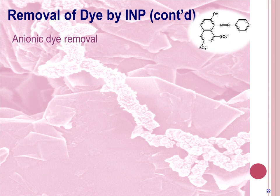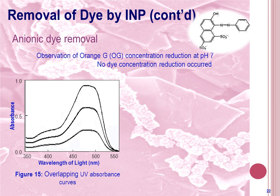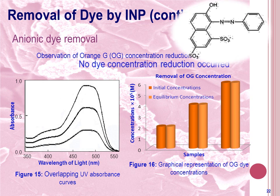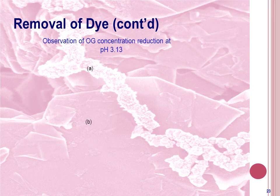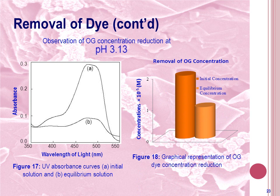In the case of treating anionic dye, which is orange G, the dye was first treated at pH 7, which gave an overlapping absorbance curve at initial and equilibrium dye concentrations, also shown in a bar chart. Due to the negative charge of orange G, no dye concentration reduction occurred at pH 7. At a reduced pH below 4.4, the INP surface charge became positive, due to which INP became capable of removing the negatively charged orange G dye. About 50% dye concentration reduction occurred at pH 3.13.